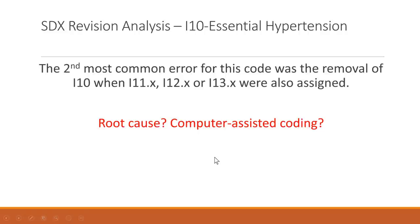The second most common error in this I10 category was the removal of I10 when I11, I12, or I13 were also assigned in the code list. When you're coding I11, you clearly don't need the I10 anymore. This pattern may be caused by computer-assisted coding where both are being assigned and the redundant I10 isn't removed. This is an important one to watch for in audits.